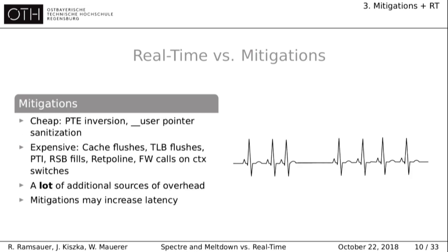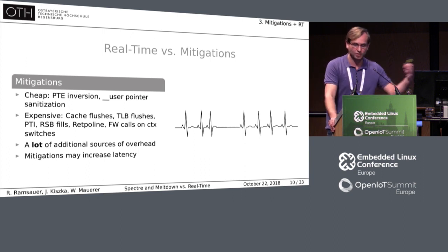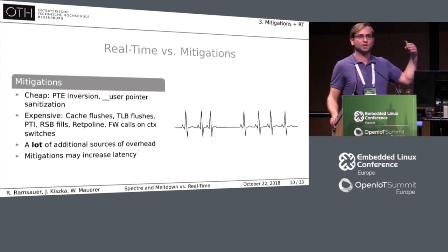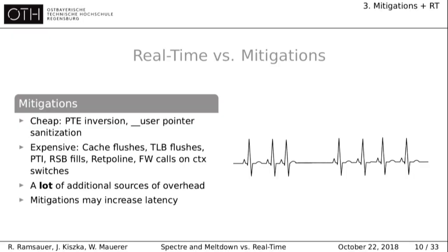There are the cheap mitigations: page table entry inversion and user pointer sanitization. But then there are the expensive ones — at some points they want to flush the caches and the Translation Lookaside Buffers. We have page table isolation, return stack buffer fills, return trampolines, firmware calls and context switches. We have to replace the microcode to introduce new instructions to control speculative execution. So we have many potential sources of additional overhead. Those mitigations might increase the latency and the jitter behavior of the systems.